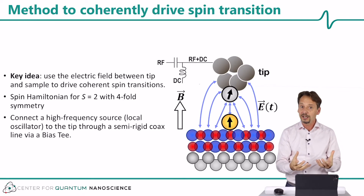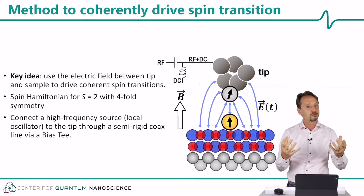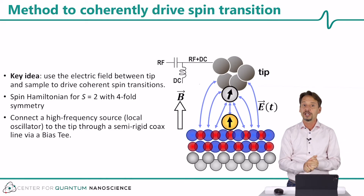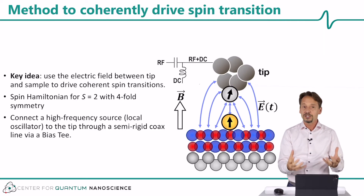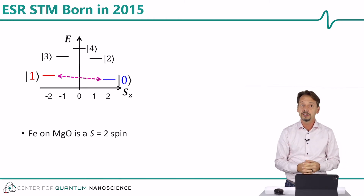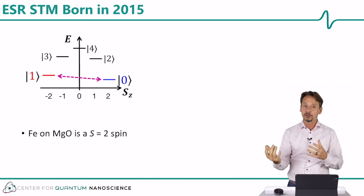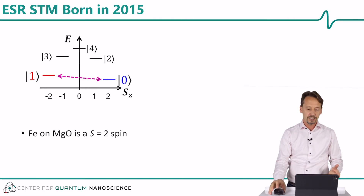This is all we need to do. We connect a high frequency source called the local oscillator in electron spin resonance to our STM via a special type of wiring, a so-called semi-rigid coaxial cable. We will show you this in one of our tutorials. We attach this to the tip and add the DC bias voltage to this fast time-dependent bias voltage via a bias-T. ESR-STM was born in 2015, just before I started the Center for Quantum Nanoscience here in Seoul, when I was still in the IBM Research Center in the United States. We first found this for a spin 2, the iron atom on MgO, where we have a transition of delta m equals plus or minus 4 between state 0 and state 1.